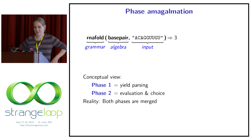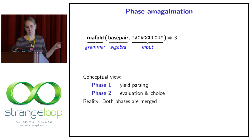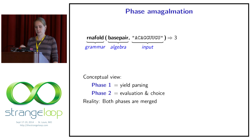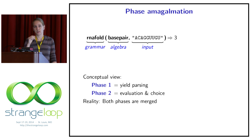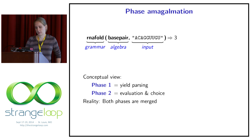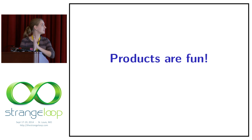There's one last part to understand: phase amalgamation. Imagine we have all our parts — the grammar, algebra, and input string — we evaluate and get some value, say three base pairs when folding RNA. Conceptually we'd think: first there's yield parsing constructing the space of all candidate trees, then all trees are transformed into numbers and we choose the best one. But actually that would be too slow. In reality, both phases are merged to make dynamic programming fast — as soon as we've constructed everything necessary, we pick the optimal thing and only keep that.